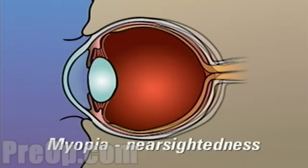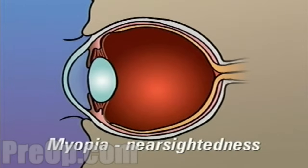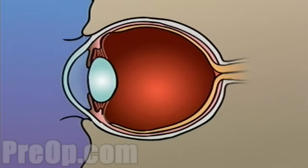Myopia, or nearsightedness, occurs when the shape of the eye is too long or the curve of the cornea is too extreme. In this case, light rays are focused on a point in front of the retina instead of on the retina itself.